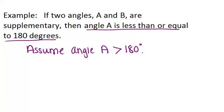Now if angle A is greater than 180 degrees and angles A plus B are supplementary, it means that angle B must be negative. Because in order to add up to 180 degrees, if angle A is already bigger than 180 degrees, angle B must be negative.